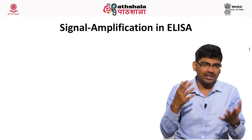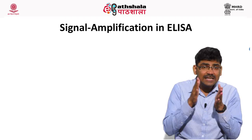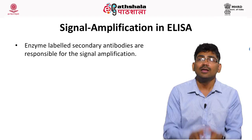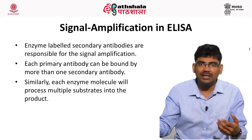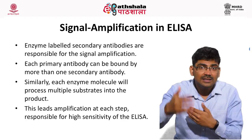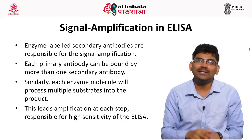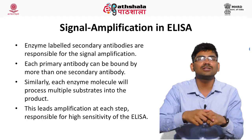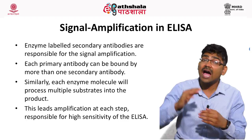Enzyme-labeled secondary antibodies are responsible for signal amplification. Each primary antibody can be bound by more than one secondary antibody. Each enzyme will process multiple substrate molecules into colored product. One antigen can be bound by many primary antibodies; many primary antibodies can be bound by many secondary antibodies; one enzyme can catalyze the conversion of thousands of substrate molecules into product. So there is amplification at each step. This signal amplification is responsible for the high sensitivity of ELISA.